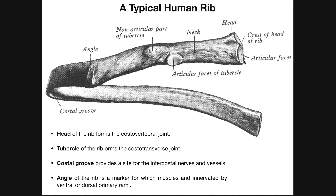When we look at the posterior part of the rib — the posterior attachment on the vertebra — that's the head of the rib. The head of the rib has two smaller articular facets, not one large one. There is a crest of the head of the rib that separates these two articular facets. The neck of the rib separates the head from the tubercle. The tubercle has two parts: a non-articular part that attaches to ligaments, and an articular facet of the tubercle that attaches to the vertebra.